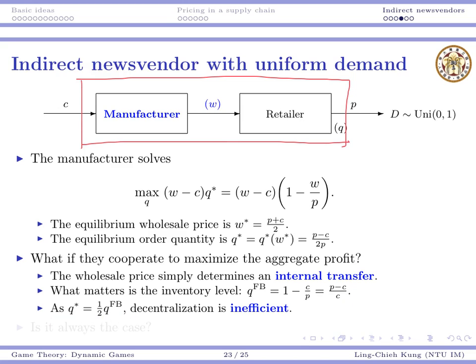If they integrate, they order a certain amount; if they become decentralized, the order quantity becomes one-half. This means the decentralized order quantity is inefficient. To maximize the system's profit, the two parties should act as integrated. Decentralization cannot maximize the system's profit, so decentralization is inefficient.